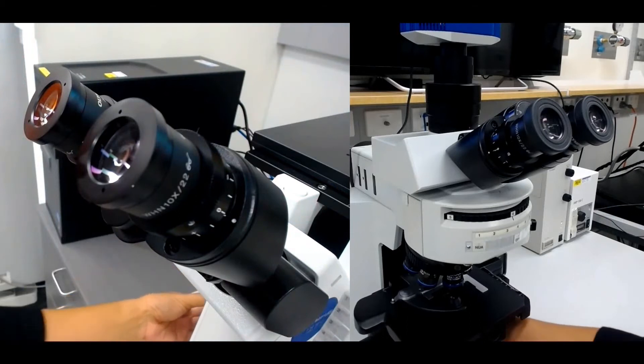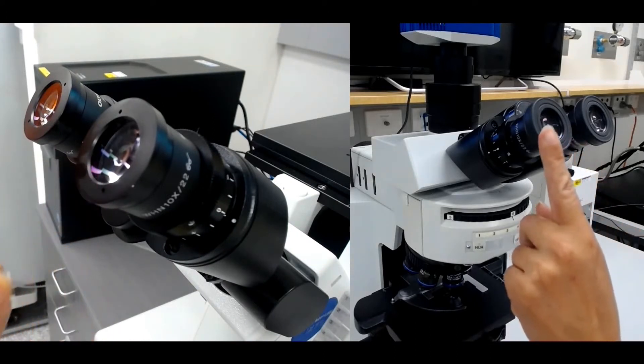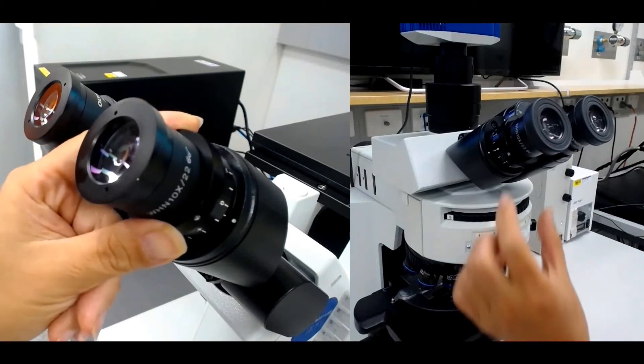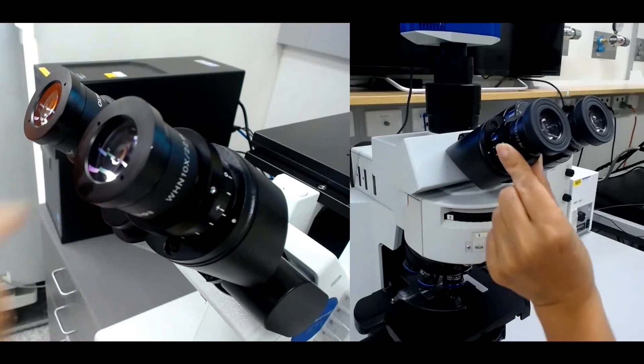Close the eye that you just used and look through the other eyepiece with your other eye. Don't touch the focus wheels but rather adjust the diopter ring on the eyepiece if the image is out of focus at all.